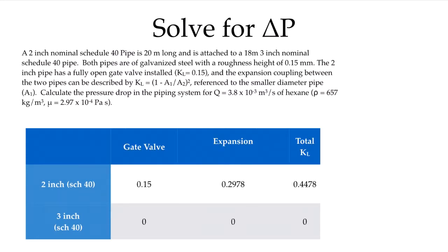Next, I need to solve for the minor losses so that I can put this together into my equation. I had in the 2 inch pipe, I had a gate valve, 0.15. And if I evaluate that expression for the expansion using the area ratio squared, A1 and A2, which I had in the previous table, I can evaluate that that expansion is 0.2978. When I add these two together, I get the total loss coefficient of 0.4478 for all of the things that are associated with the 2 inch pipe. And of course, I didn't have any in the 3 inch pipe. In this example, there is no loss coefficient in the 3 inch pipe.